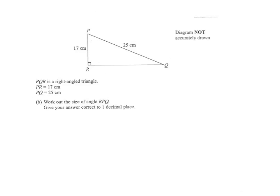On to part B. PQR is also a right angle triangle. PR is 17 and PQ is 25. We've got to find the angle RPQ, so the angle we're trying to find is at P — I'll mark that in. In relation to the angle at P, we've been given the adjacent side and the hypotenuse, and we're trying to find this angle X here.